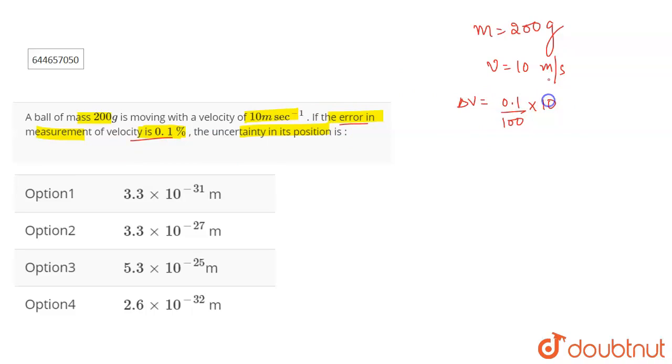So this will become - the uncertainty in velocity will become 0.01 meters per second, right.